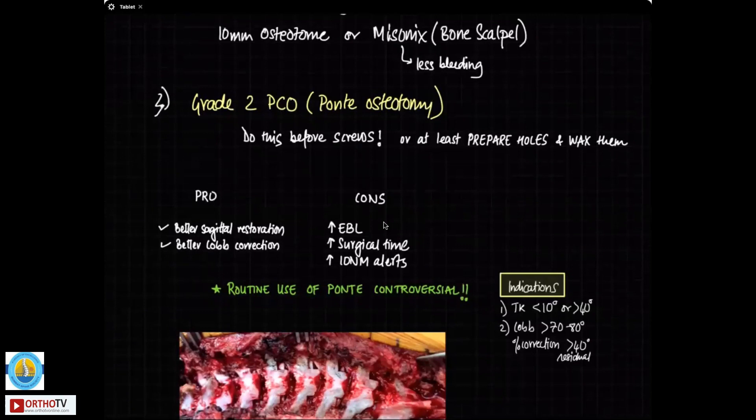The third is actually the thing that is optional, which is the grade 2 posterior column osteotomy or commonly known as the ponty osteotomy. Now, the ponty osteotomy, the pros of it are it allows for a better sagittal restoration because by doing a ponty osteotomy, you can lengthen the posterior column. Remember, the ponty osteotomy initially was described for shortening the posterior column, but you can also use it for lengthening the posterior column. So it can afford a better sagittal restoration and it can also afford a better cobb correction of the scoliosis. But the problems are that it causes more blood loss, it increases your surgical time and because you are going to expose the dura and the spinal cord right here in the midline is vulnerable to problems and you have a higher chance of getting an intraoperative neuromonitoring alert with ponty osteotomy.